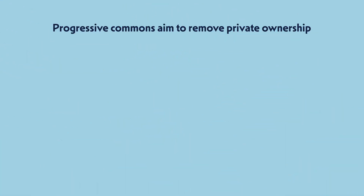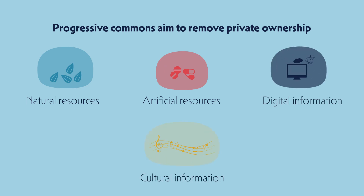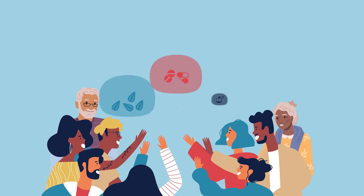Progressive commons aim to remove private ownership of both natural and artificial resources and of goods that are immaterial, such as digital and cultural information. Their goal is to allow people to reclaim access to resources that were made inaccessible by politics or capitalism, while increasing sharing and solidarity.